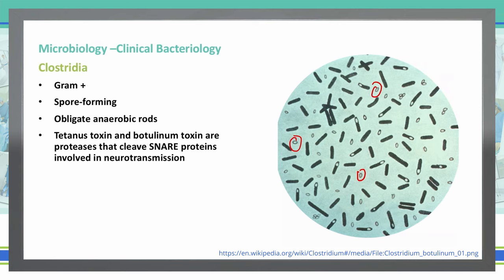Tetanus toxin and botulinum toxin, which are two forms of Clostridia, are proteases that cleave the SNARE proteins, and those SNARE proteins are what are involved in neurotransmission. So let's look further into specific types of Clostridium.